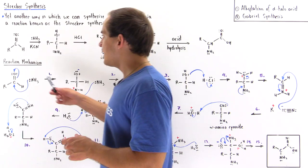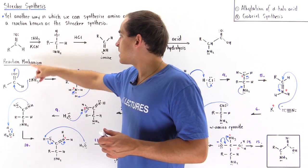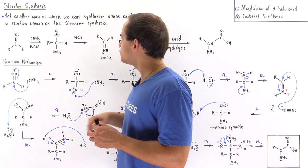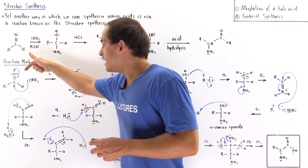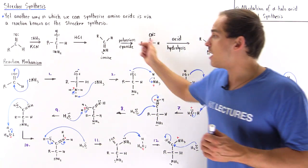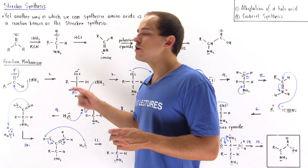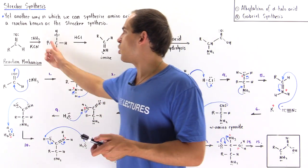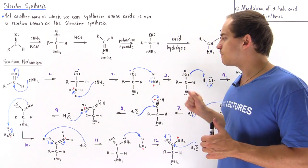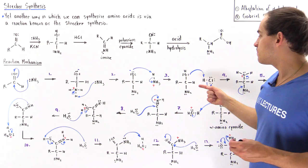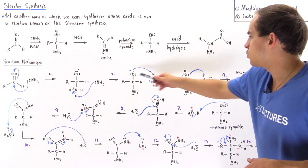Let's begin with step one. We take our aldehyde, keeping the R group as R. Ammonia acts as our nucleophile, attacking the carbon of the carbonyl group, nucleophilically displacing the pi bond and placing those electrons from the pi bond onto the oxygen. Now we have a negative charge on the oxygen and a positive charge on the nitrogen — we have the ammonium group. In step two, ammonia deprotonates this nitrogen, and in step three the ammonium formed protonates the oxygen, forming this intermediate.